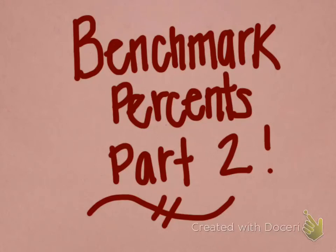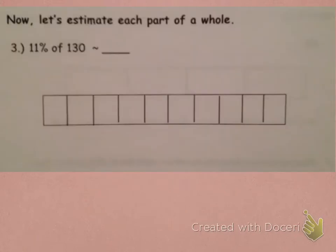Now, let's continue with our benchmark percents. This is part two. We are going to pick it up at question number three, where it says, let's estimate each part of a whole. So, here it's telling us that we have 11% of 130 is about.